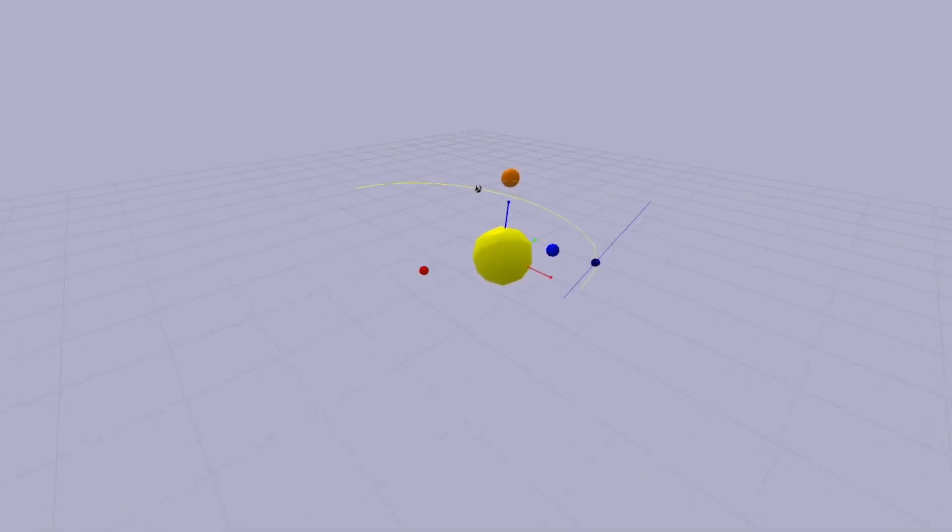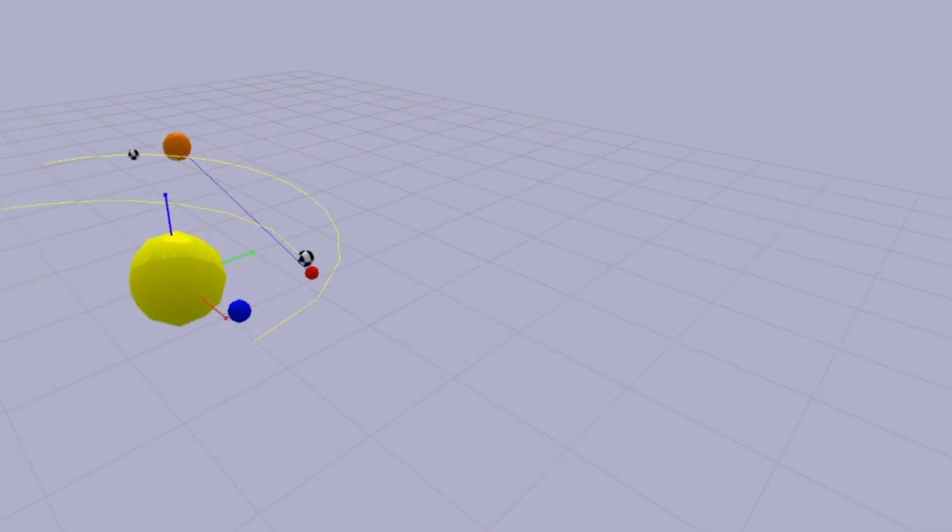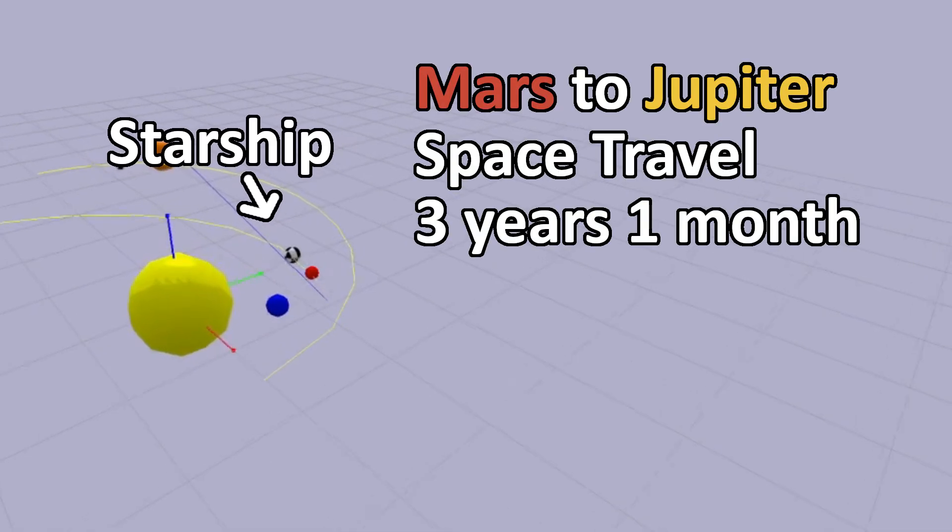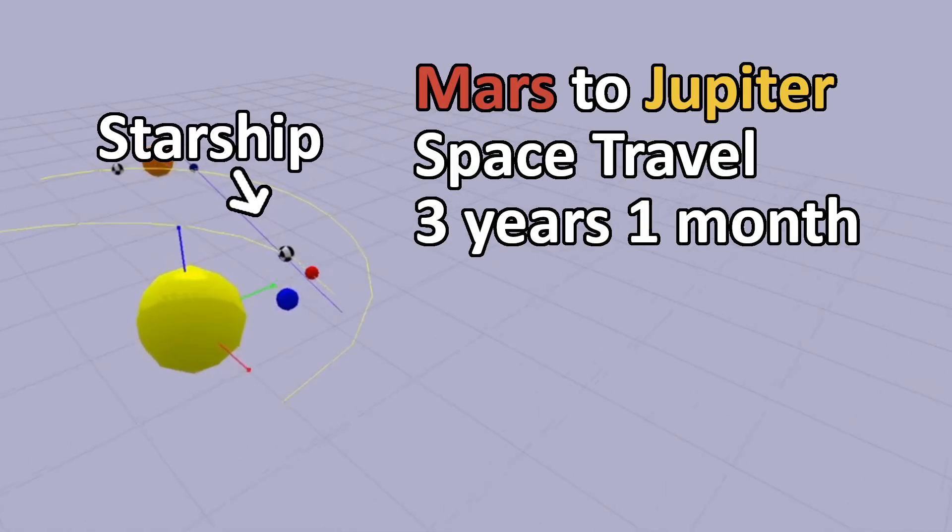Let's zoom in on Mars and watch it send a Starship to Jupiter, in this case the black and white sphere. We draw the yellow line where Starship will travel along until it reaches Jupiter. This takes three years and one month.